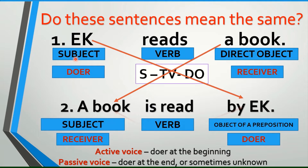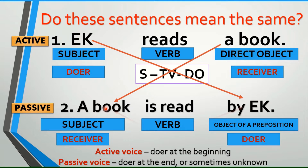Passive voice when the doer is at the end or sometimes unknown. Number one is in the active voice and number two is in the passive voice. Why do writers sometimes choose to use the passive construction? Well, there are two reasons. First, they want to emphasize the receiver of the action because it's more important than the doer. Second, they do not know the doer of the action — that's why sometimes the doer is unknown. So, when we say active voice, the subject is the doer of the action. When we say passive voice, the subject is the receiver of the action, and sometimes the doer is unknown.